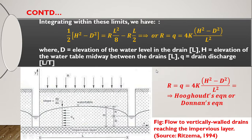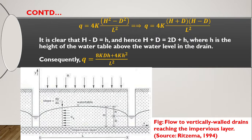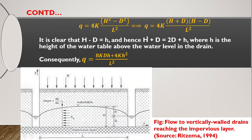The equation q = 4K(H² − D²)/L² can be rewritten by factoring: H² − D² = (H + D)(H − D). Here H − D = small h, and H + D = 2D + h. Substituting these: q = (8KDh + 4Kh²)/L². This is the expanded form of Hooghoudt's equation, where h is the height of the water table above the water level in the drain and D is the height of water inside the drain.